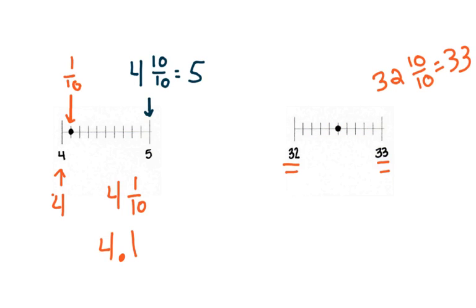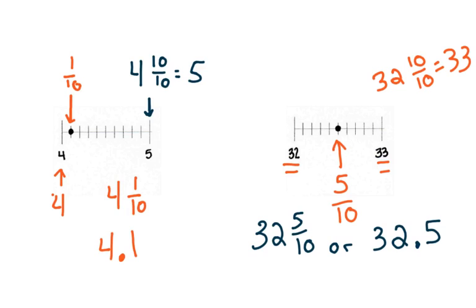Let me erase that. And that dot is right at 5 tenths. Half. So I'm going to combine 32 with the 5 tenths. So it's 32 and 5 tenths. Or, decimal form, 32 and 5 tenths.